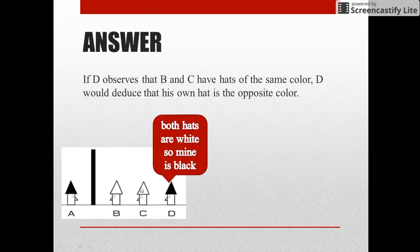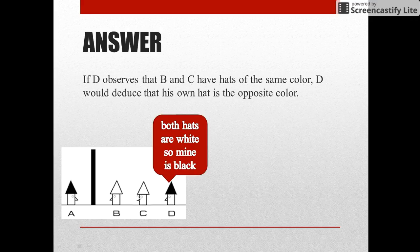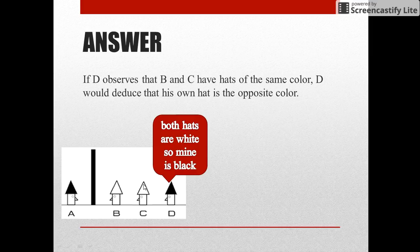Let us take the first case. If D observes that B and C have hats of the same color, then D can finally conclude that the color of his hat is opposite to that of B and C. Since B and C are wearing white hats, D can surely deduce that the color of his hat must be black.